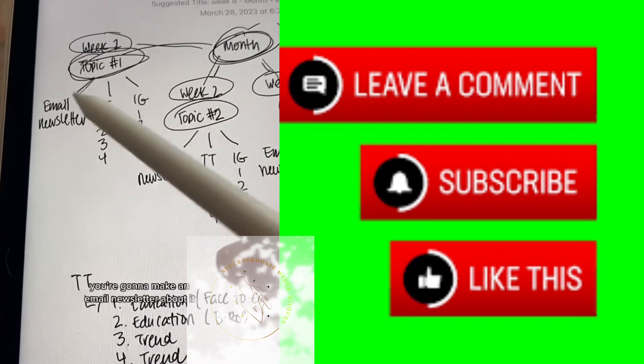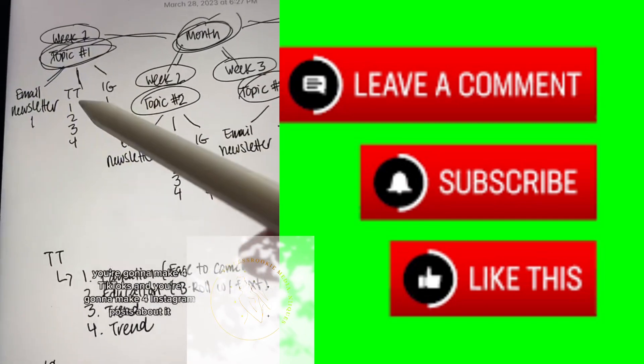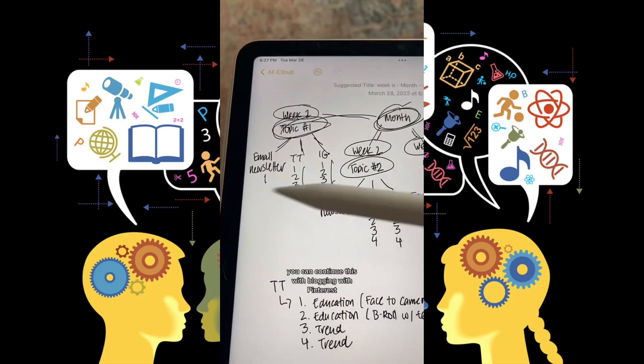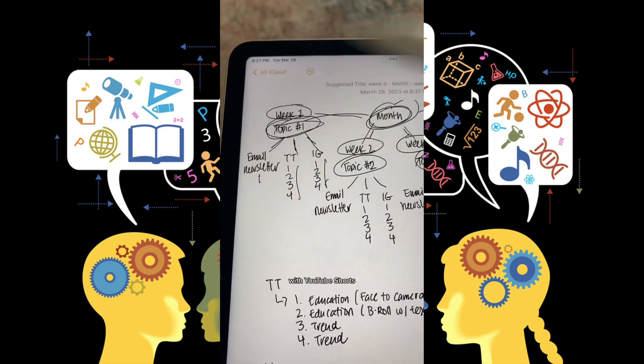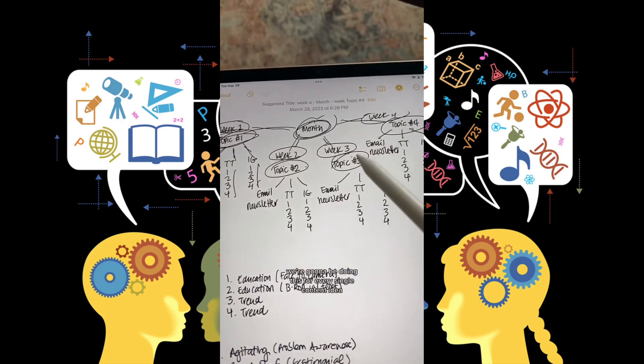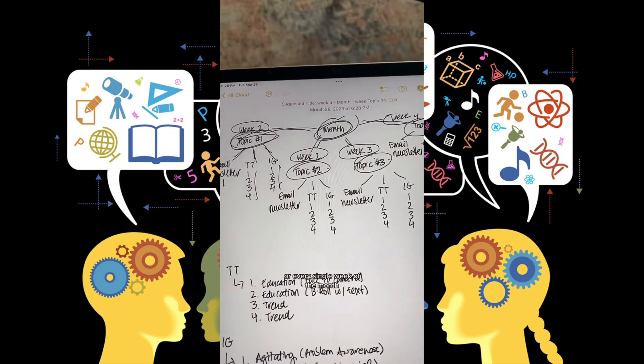You're going to take that content idea, you're going to make an email newsletter about it, you're going to make four TikToks, and you're going to make four Instagram posts about it. You can continue this with blogging, with Pinterest, with YouTube shorts, as many platforms as you want. I'm just doing three for now. We're going to be doing this for every single content idea or every single week of the month.